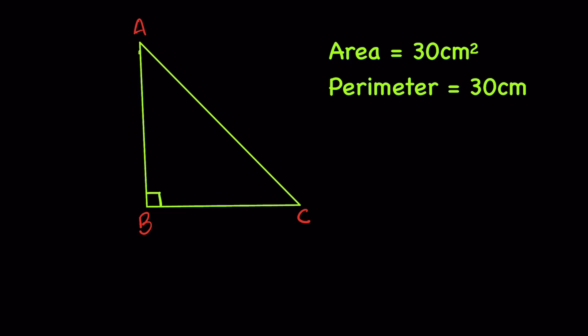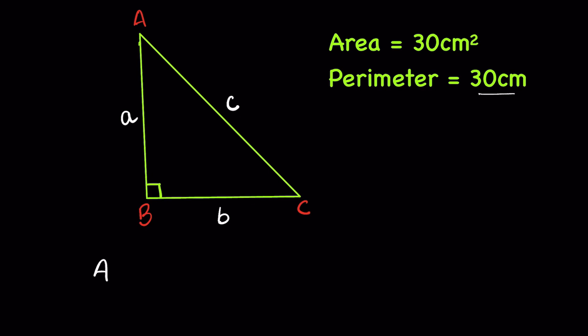Given here is the right angle triangle ABC whose area is 40 cm² and perimeter is 30 cm. We have to find all three sides. This is a right angle triangle. Let the sides be lowercase a, AB is lowercase a, BC be lowercase b, and AC be lowercase c.